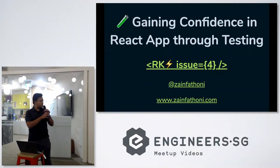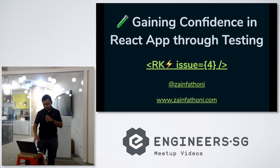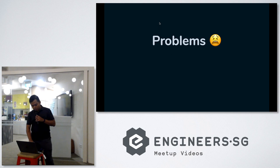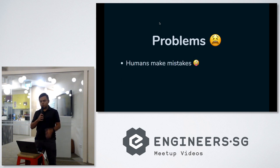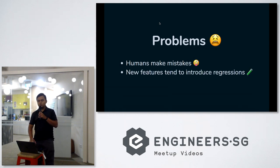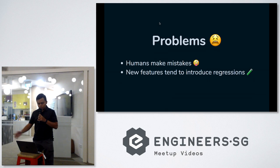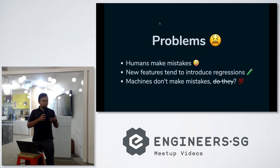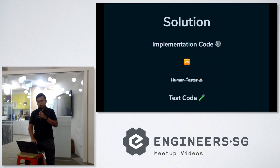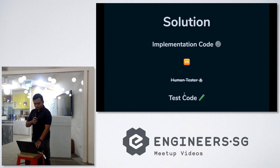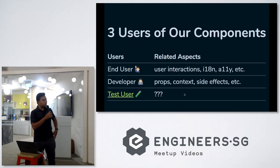Good evening everybody, my name is Zain. Today I'm going to present about gaining confidence in a React app through testing. The problem I'm trying to solve is that we as humans often make mistakes, and new features tend to introduce regressions. Since machines don't make mistakes, we want to replace our human tester with code — that's how we have tests in our code.